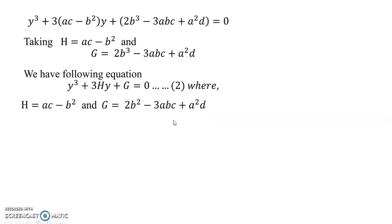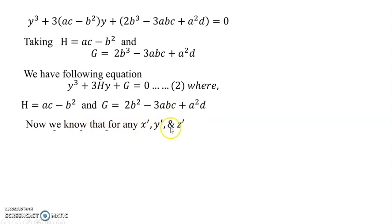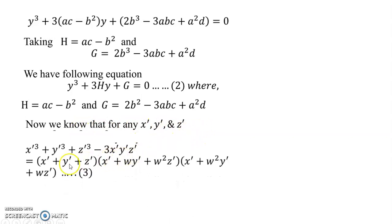Now, how can we find h and g? We consider the algebraic identity: a³ + b³ + c³ - 3abc. Setting y' and z' appropriately, we get y'³ + z'³ = g, and h = x'·y'. It is straightforward from here.